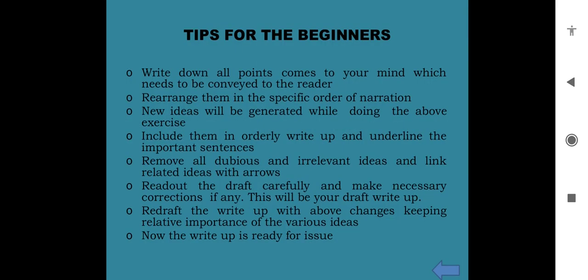Tips for beginners: The writer has to scribble down all relevant points that come to his mind relating to his writing. After that, he has to rearrange them in logical sequence and underline the important sentences. During this exercise, new ideas may emerge. He has to include them in an appropriate place. Dubious and irrelevant ideas have to be removed, and related ideas need to be linked with arrows. The draft has to be read carefully to find out missing links and inappropriate words or phrases or sentences, and make necessary corrections if any. This will be the final draft write-up.